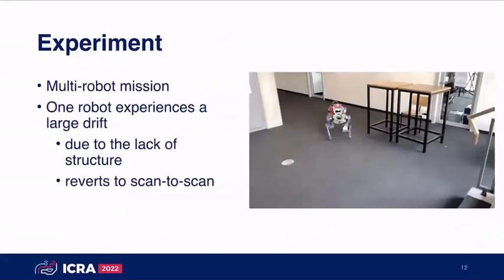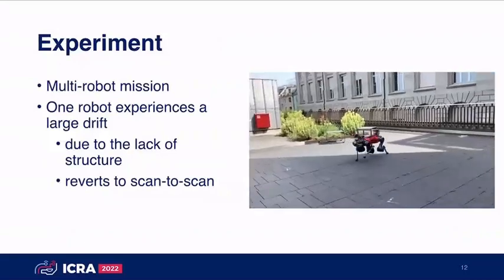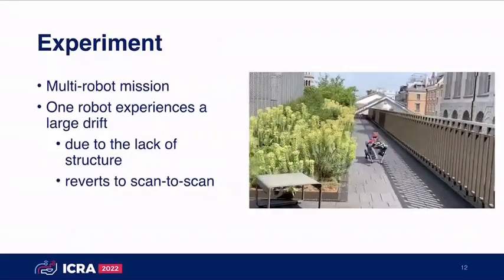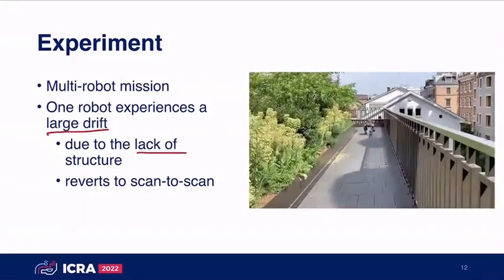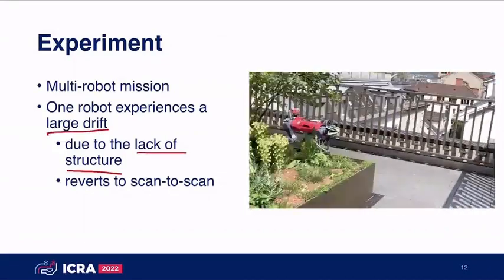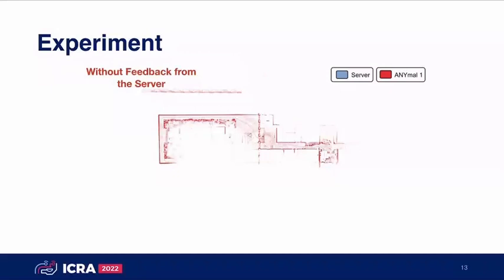We tested this in various different environments. Here our robot walks to the outer terrace and experiences a very large drift due to the lack of structure on that terrace. Looking at the onboard estimation of this robot, we can see that over time it accumulates more and more drift. In this video we see the onboard map in red and, slowly coming up with a delay, the server map in blue.